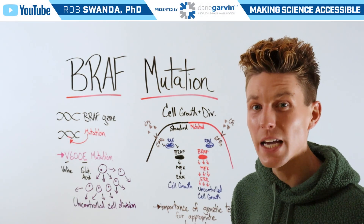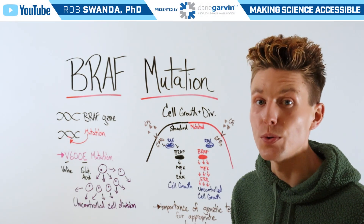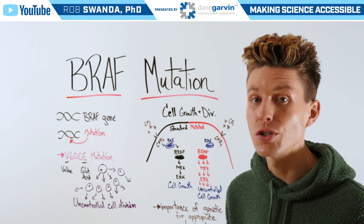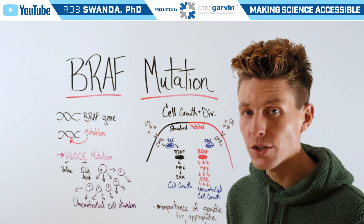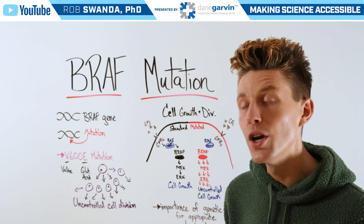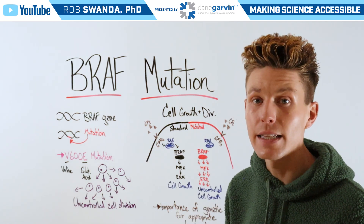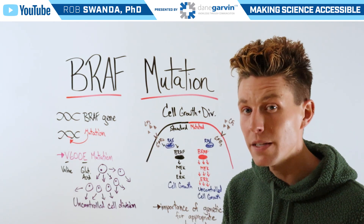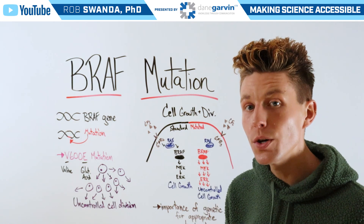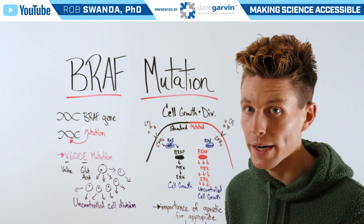We previously talked about different types of mutations that can lead to cancer, such as BRCA or HER2, and we want to continue that trend and talk about another mutation known as BRAF and how that can lead to cancers, specifically in melanoma, but also in other forms of cancer such as lung or colorectal.